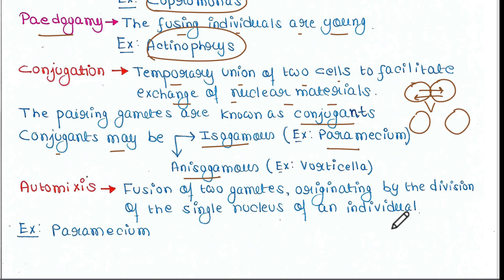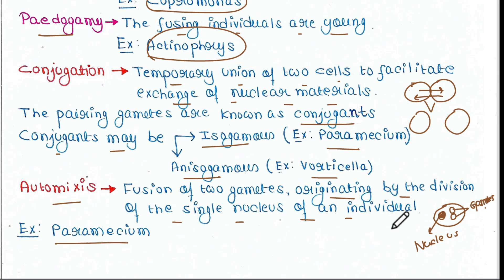The last type of sexual reproduction is automixis — the fusion of two gametes originating by the division of the single nucleus of an individual. The single nucleus divides to form two gametes, which then fuse again to make a new individual. This is found in paramecium.